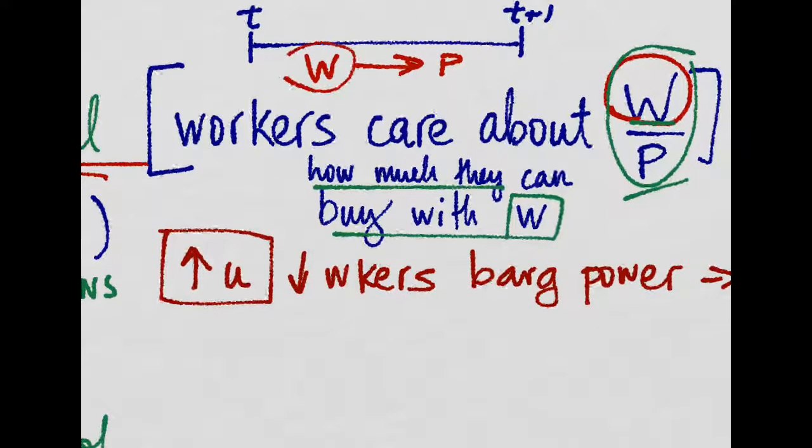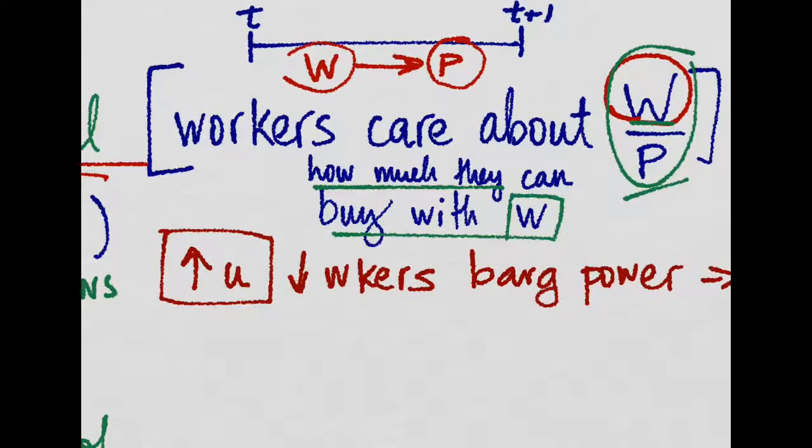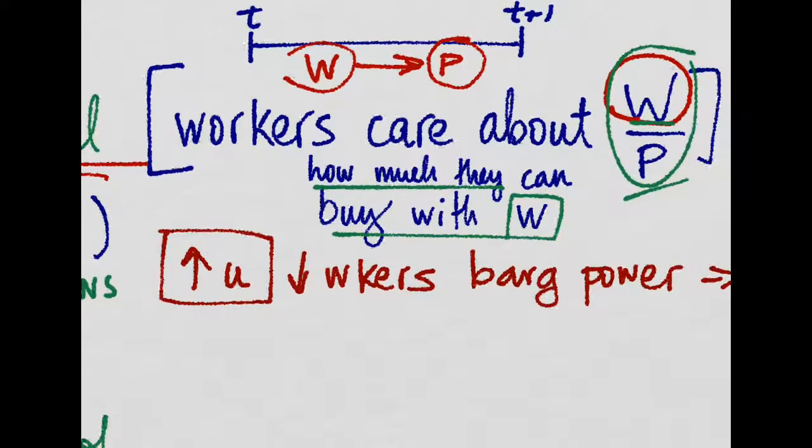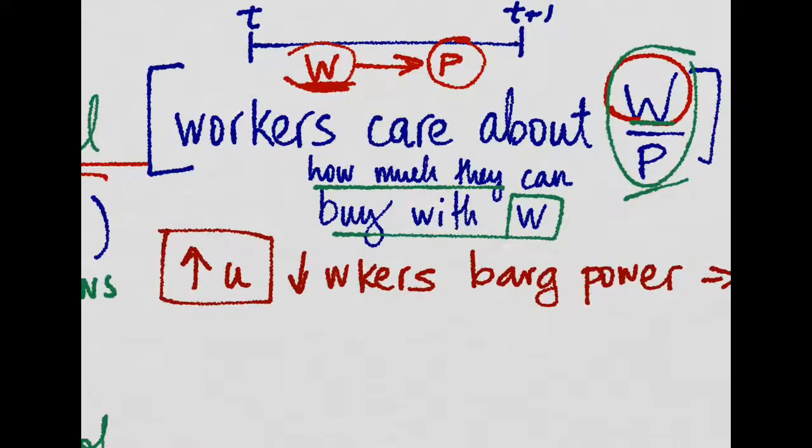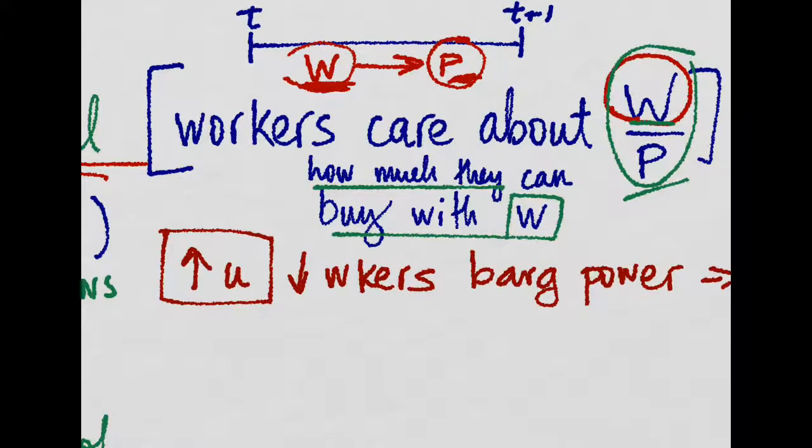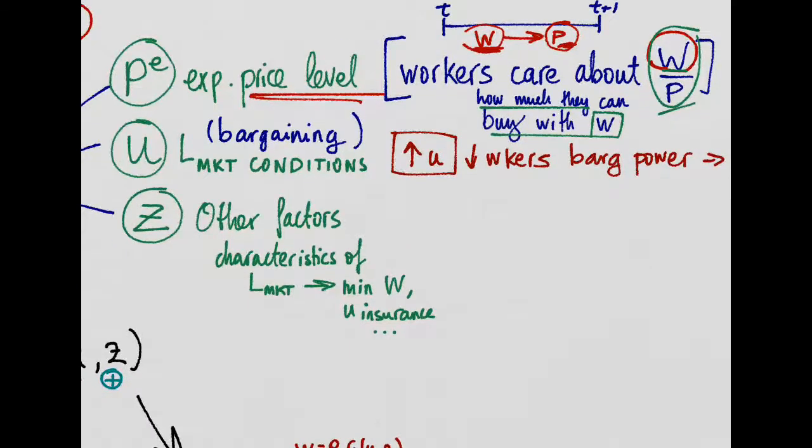They care about the amount of goods and services they will be able to buy with the wage they're asking for. But remember, wages are set before prices. So at the moment workers make the decision about what wage to claim, they do not know exactly what the price is going to be. That is why we talk about the expected price level, which is the price level that workers expect will exist after they set the wages along with the firms.